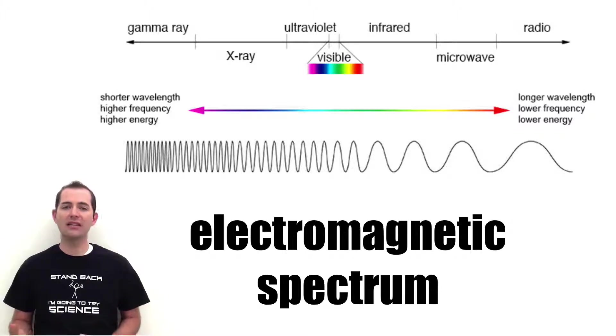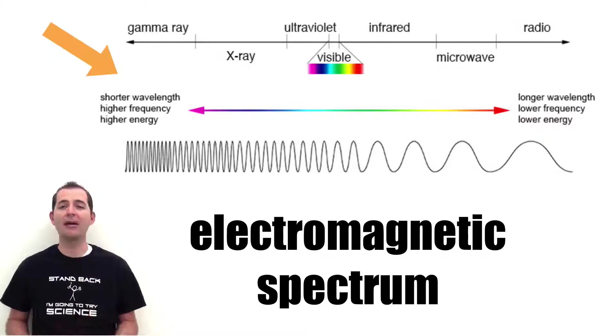On one side of the electromagnetic spectrum we have radio waves which have a very long wavelength and very low frequencies. Radio waves also carry a small amount of energy. On the other end of the spectrum we have gamma rays which have a very short wavelength and a very high frequency and high amounts of energy.